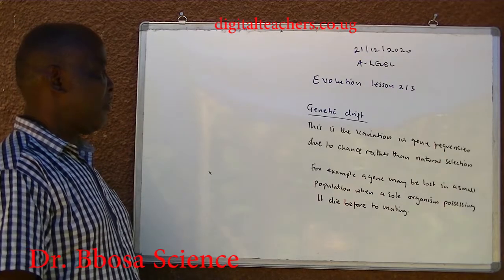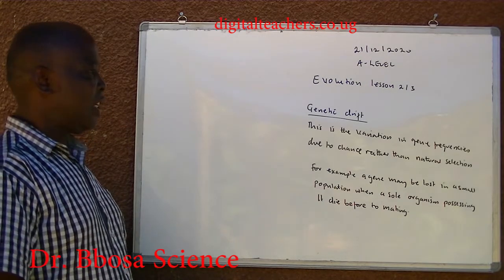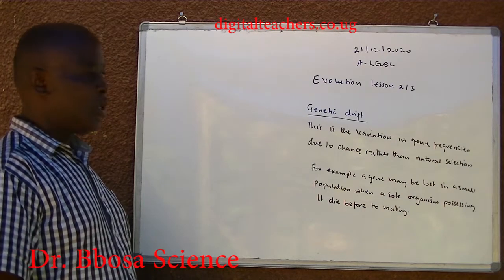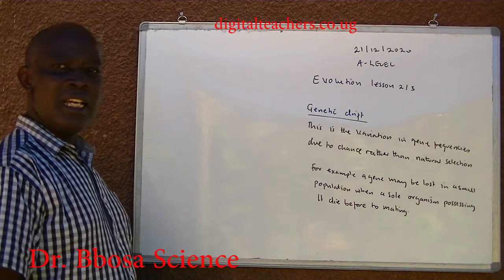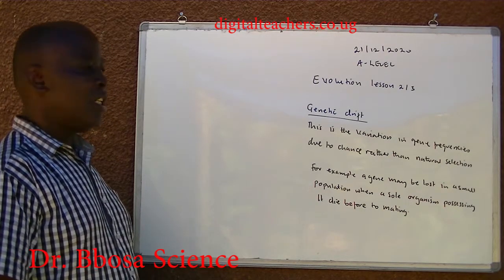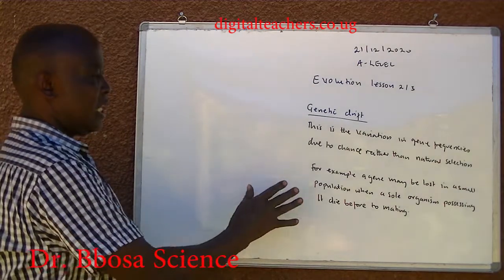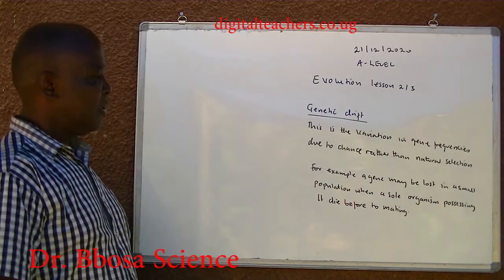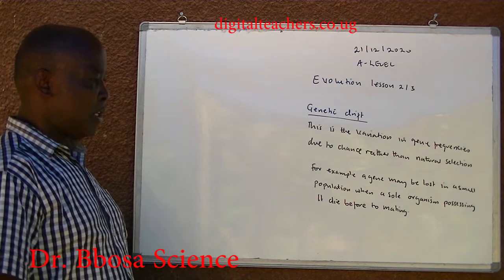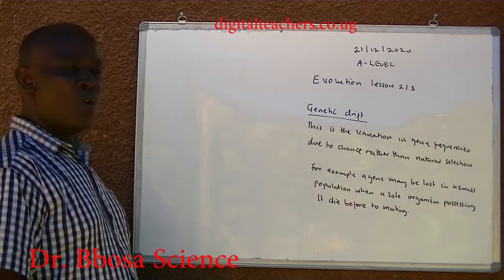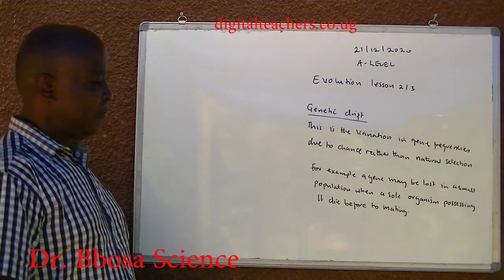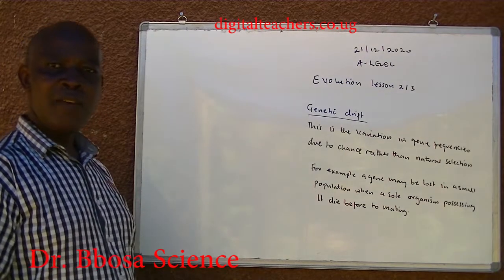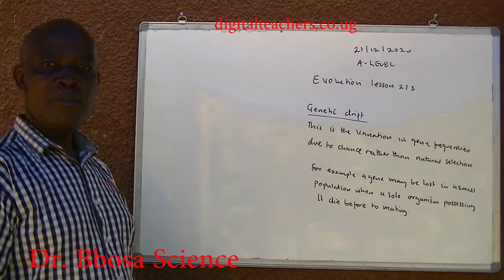Genetic drift. This is the variation in gene frequencies due to chance rather than natural selection. For example, a gene may be lost in a small population when a small organism possessing it dies before mating.